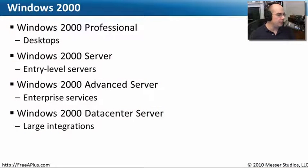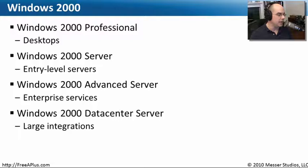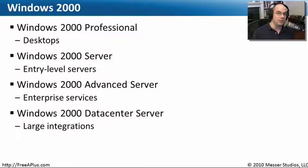There are different versions of Windows 2000 you need to know about. Windows 2000 Professional was designed to go on people's desktops and laptops. Windows 2000 Server, Advanced Server, and Data Center are for services that might be in a server farm — they might be database servers or web servers.